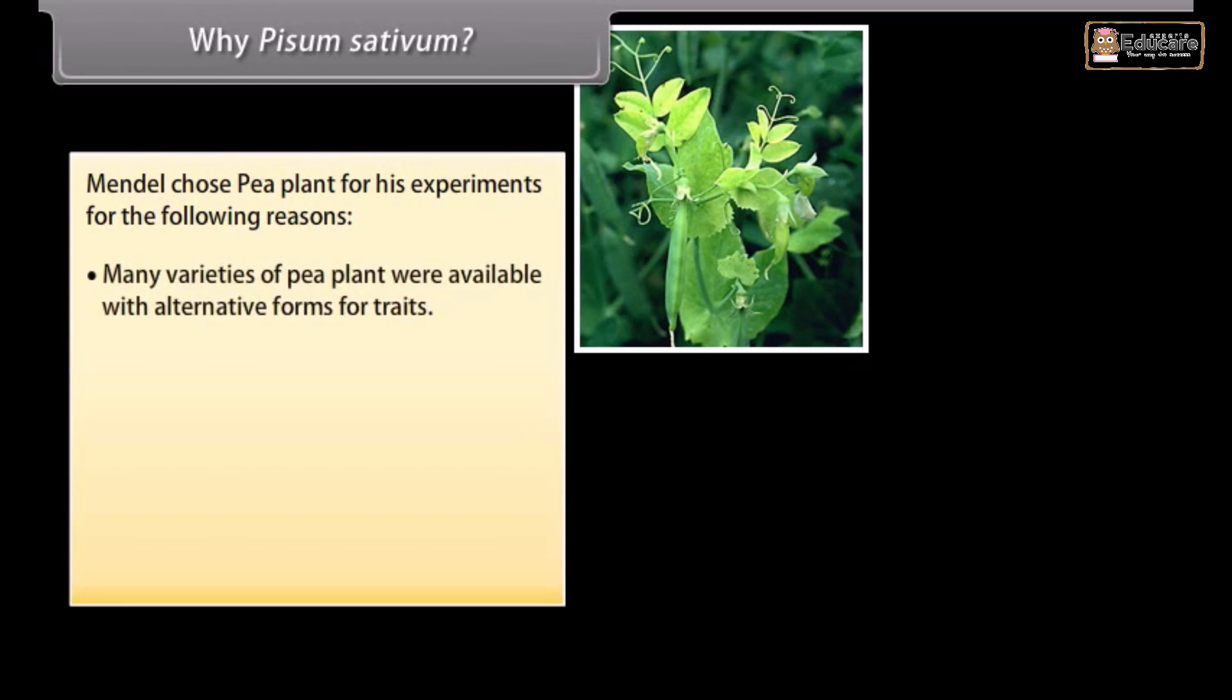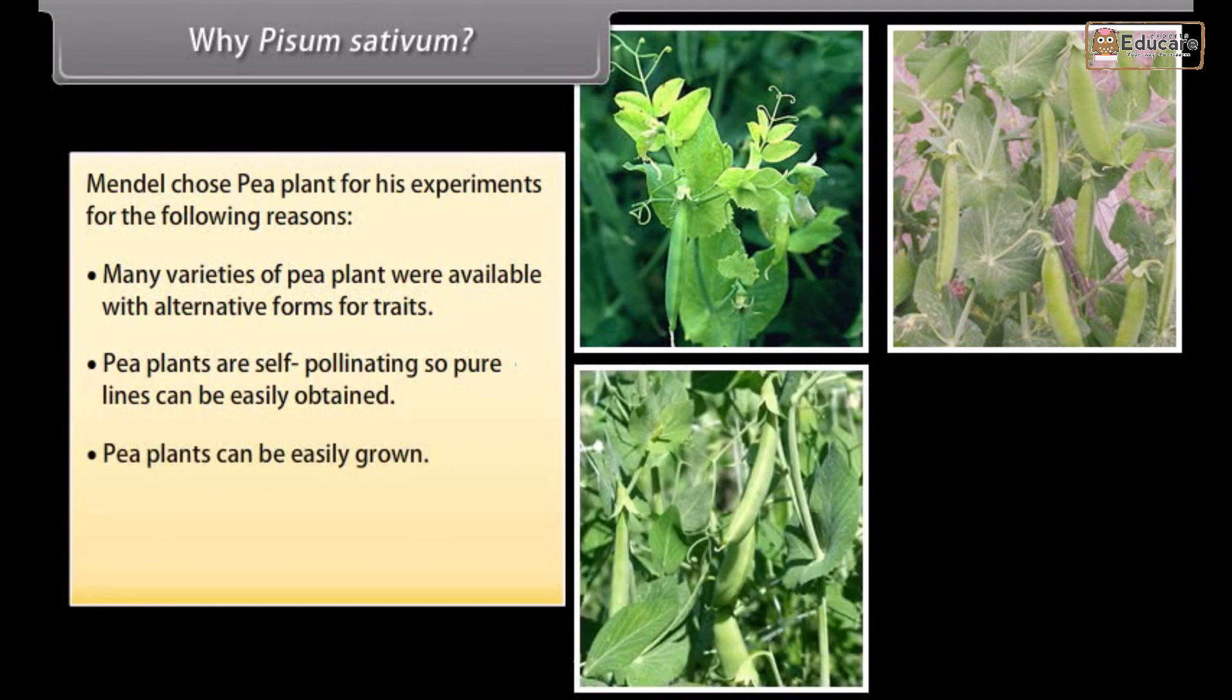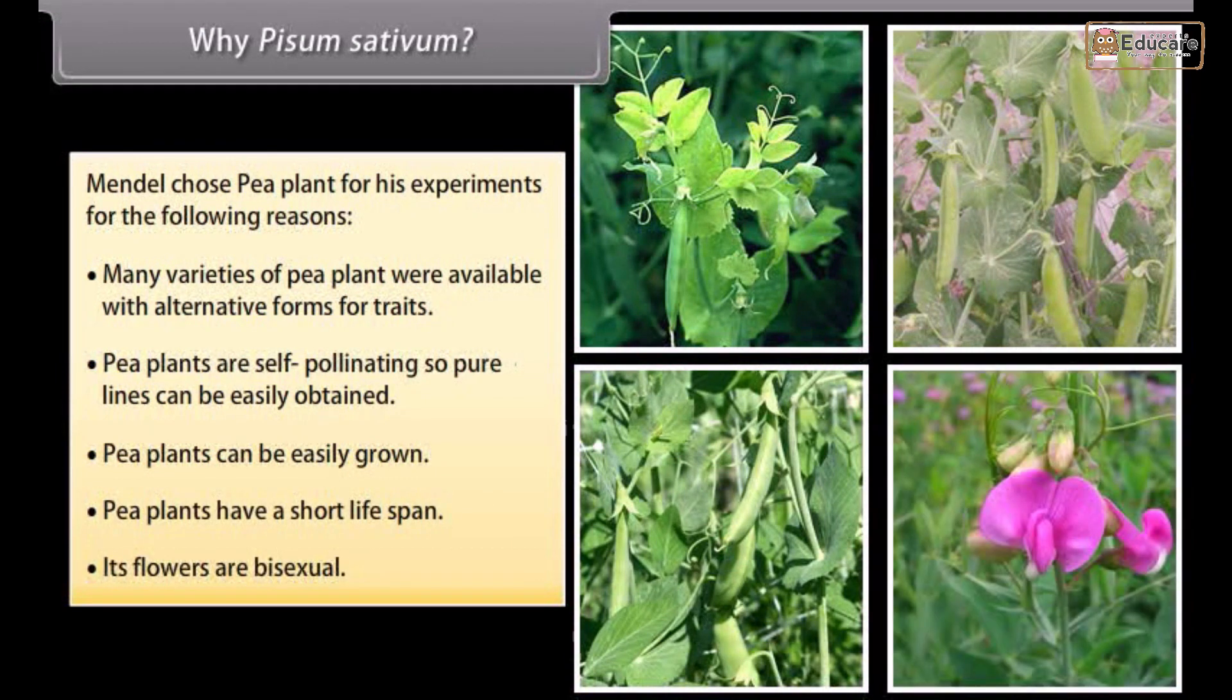Many varieties of pea plant were available with alternative forms for traits. Pea plants are self-pollinating so pure lines can be easily obtained. Pea plants can be easily grown. Pea plants have a short life span. Its flowers are bisexual.